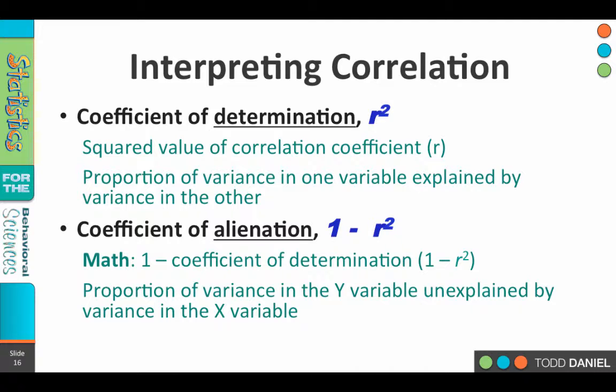Because r values are always between 0 and 1, if we square them they're always going to be positive, and we could subtract them from 1 to find out what is the remainder. The coefficient of alienation is 1 minus r squared, and it simply tells us the proportion of variance in the y variable that was unexplained by variance in the x variable. So coefficient of determination tells us how much variability has been explained, and the coefficient of alienation just gives us the remainder.